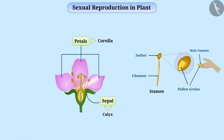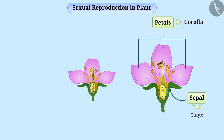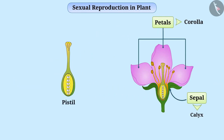The color of petals and their fragrance attract insects, which play an important role in moving pollen grains from one flower to another. In the center of the flower, you will see a jug-like part called the pistil. It is the female reproductive part of the plant, and it has three parts. The swollen bottom part is the ovary, the middle elongated part is the style, and the terminal part which may be sticky is the stigma.